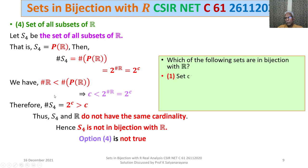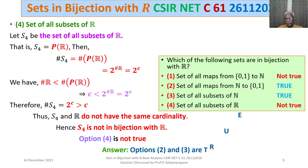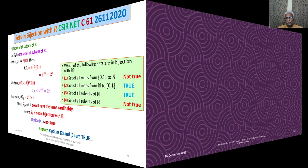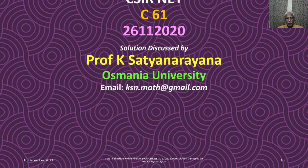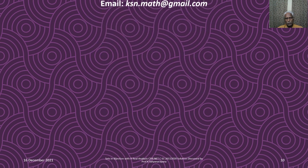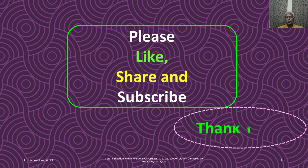Let us see our final answer. Options 1 and 4 are not true. Options 2 and 3 are true. So the final answer is: options 2 and 3 are correct. That completes the discussion of the solution of this problem from Real Analysis on sets in bijection with R. I hope you have understood the solution. I wish you all the best. Thank you.